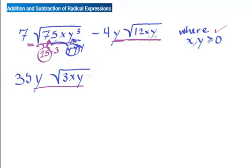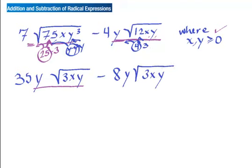Now looking at that 12 — it has a 4 in it, which is 4 times 3. When that 4 comes out of the square root it's a 2, and that 2 combines with the 4 out front to make 8, because this is multiplication. The y is still there, and what's left inside is a 3, an x, and a y. Magically, notice that both Scrabble tiles now show the same thing — √(3xy).